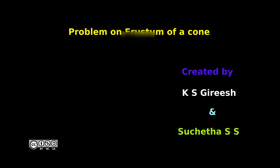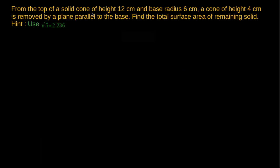For this, let us consider this example. From the top of a solid cone of height 12 cm and base radius 6 cm, a cone of height 4 cm is removed by a plane parallel to the base. Find the total surface area of remaining solid. Here, consider the value of root 5 as 2.236.